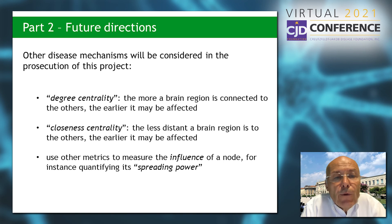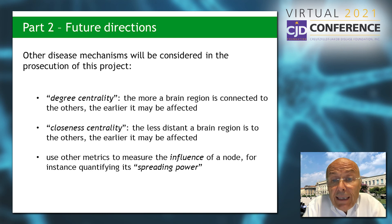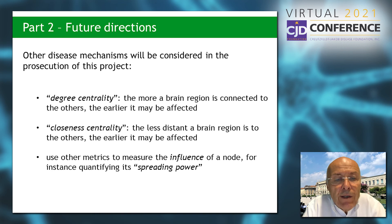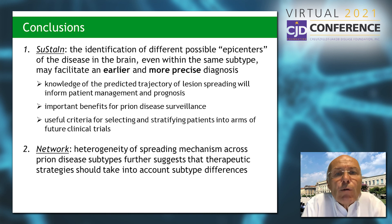We are going to evaluate degree of centrality — the more a brain region is connected to others, the earlier it may be affected — and closeness centrality — the less distant a brain region is to others, the earlier it may be affected. We will also use other metrics to measure the influence of a node, such as quantifying its spreading power.